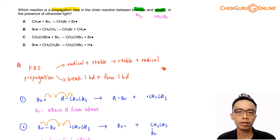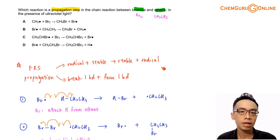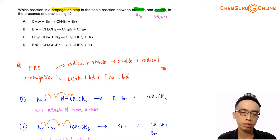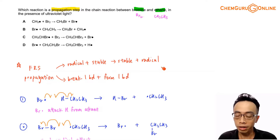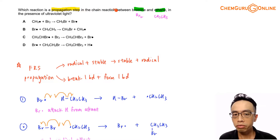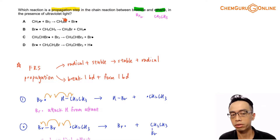Hi everyone, this is Marek Pohan, the chemistry guru. In this video, we want to discuss how to determine the propagation step for free radical substitution of ethane using this question as an example. This question asks which reaction is a propagation step in the chain reaction between bromine and ethane in the presence of ultraviolet light.